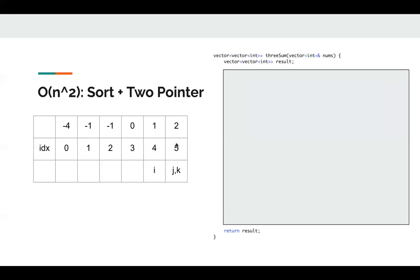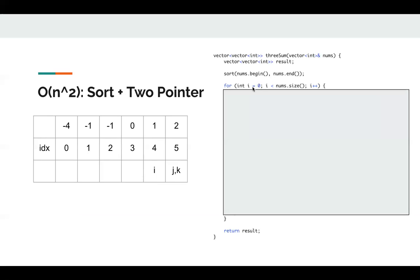How do we code? We have a result. This is our final result we want to return. First, we sort our nums. Then we fix i. So we have outer for loop to fix i.